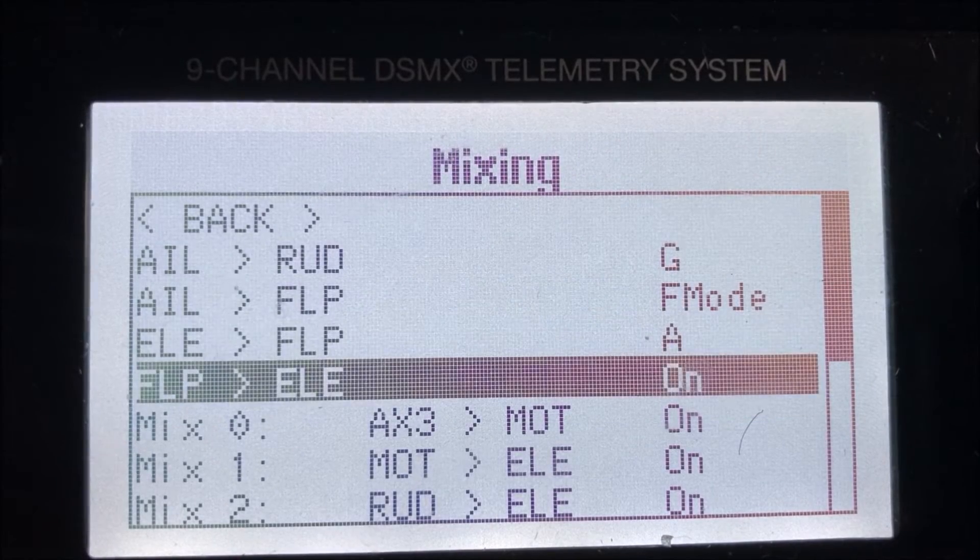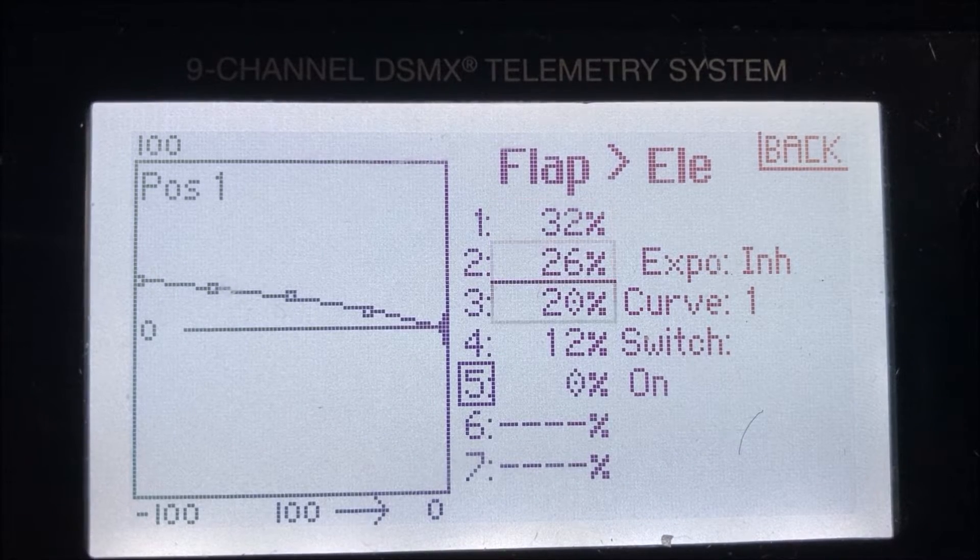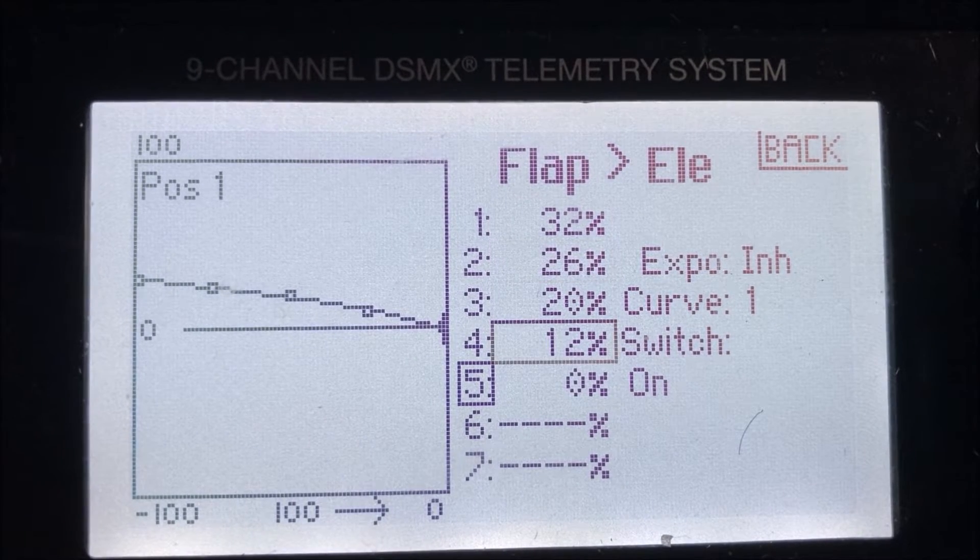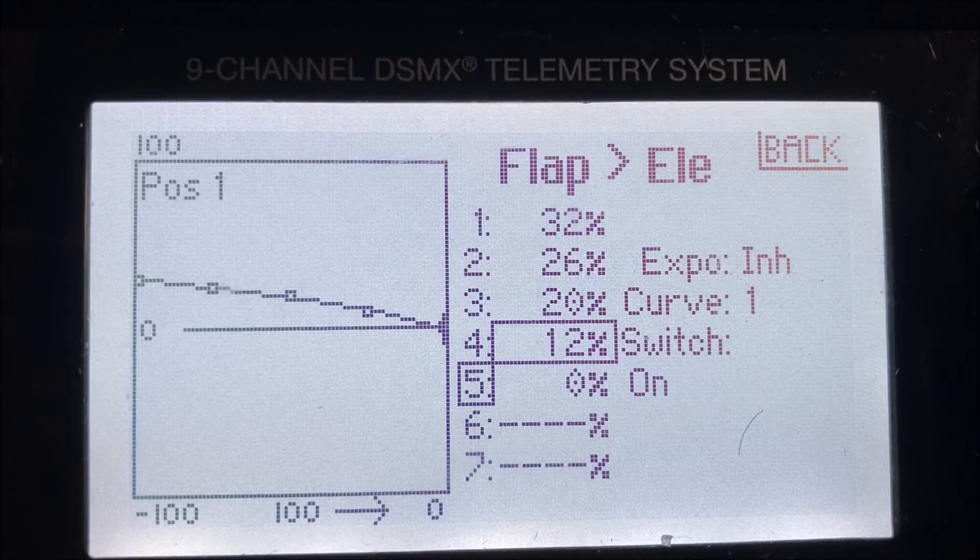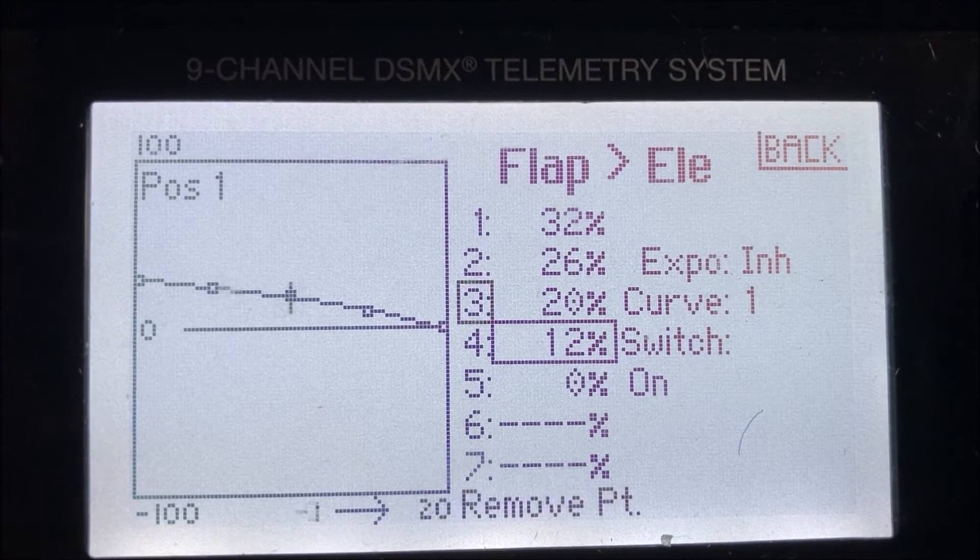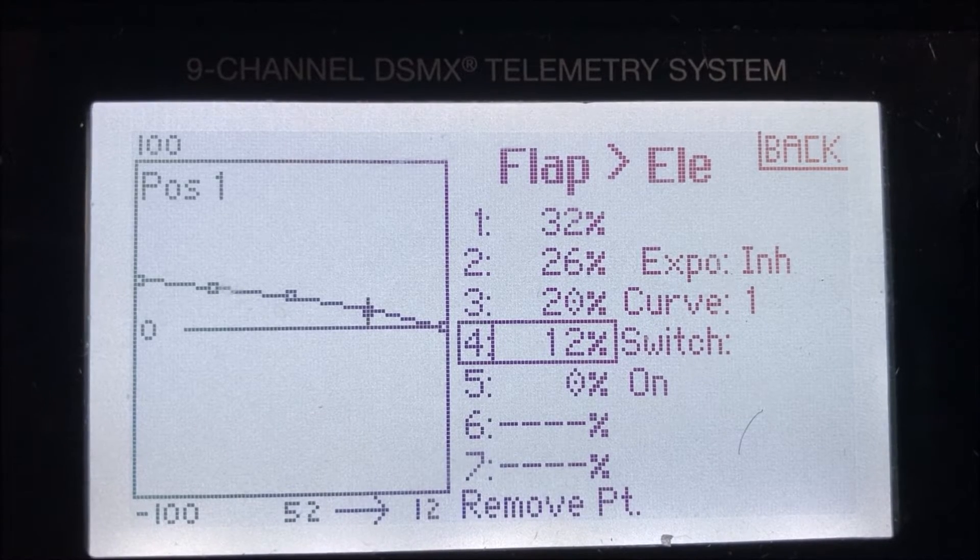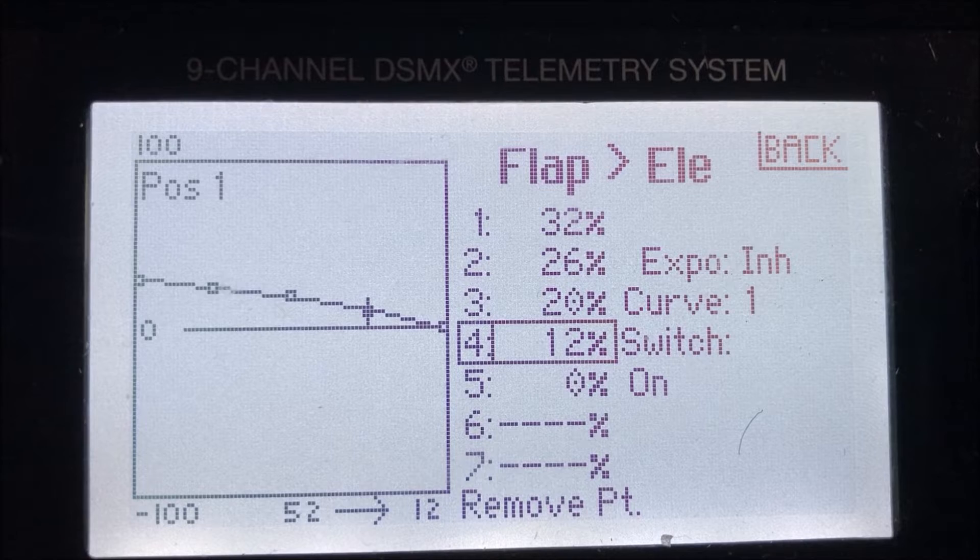Then you go to flaps to elevator. This mix is a curve and when you move the stick there is a line that shows how much you have moved and the point that you will adjust here.